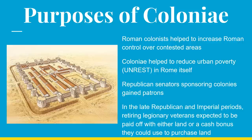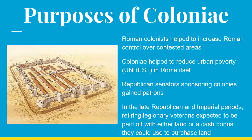Another benefit of colonies was reducing urban poverty in Rome itself — not because Roman leadership was particularly thoughtful, but because they understood that poverty leads to unrest. In a crowded ancient environment like Rome, if the peasants got unhappy and started to riot, it could become very dangerous even for people protected by armed guards. With pre-modern weaponry, a sufficiently angry crowd could overrun trained soldiers, as we see with the Nika riots in Constantinople in the 6th century.